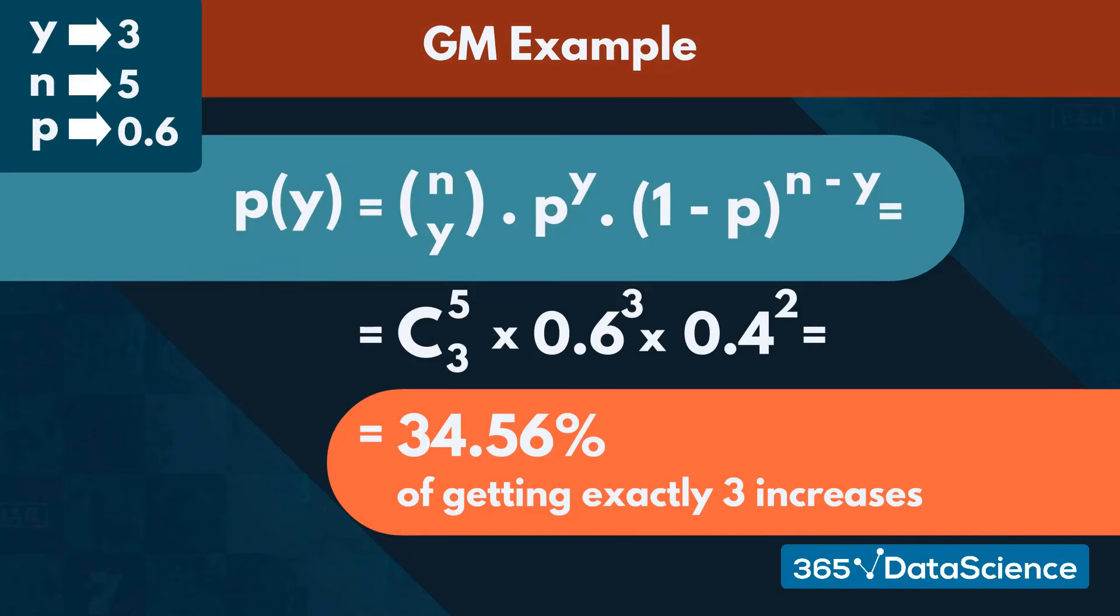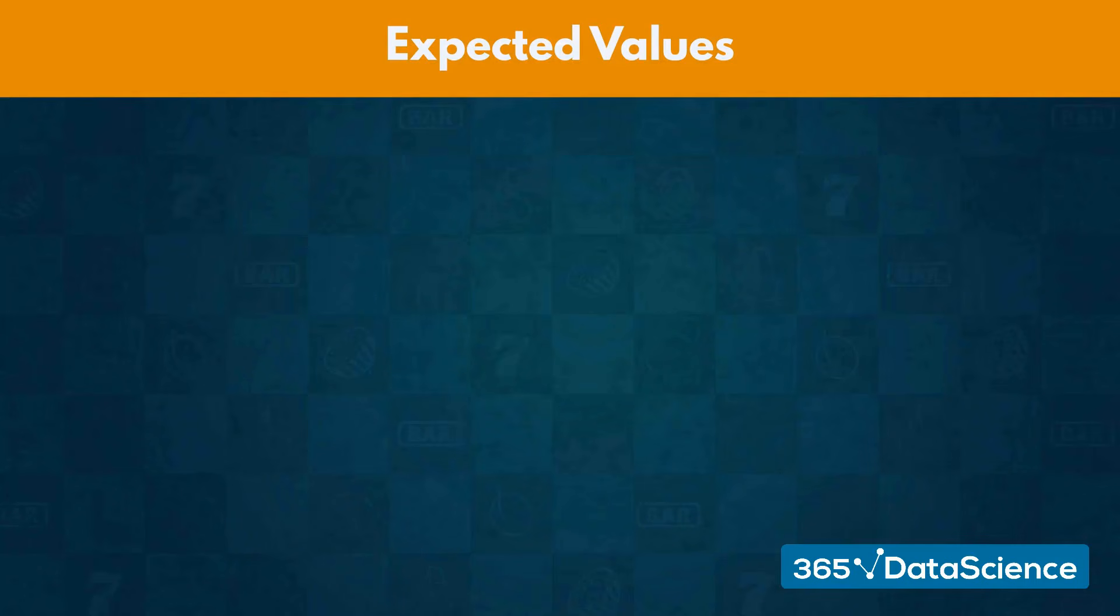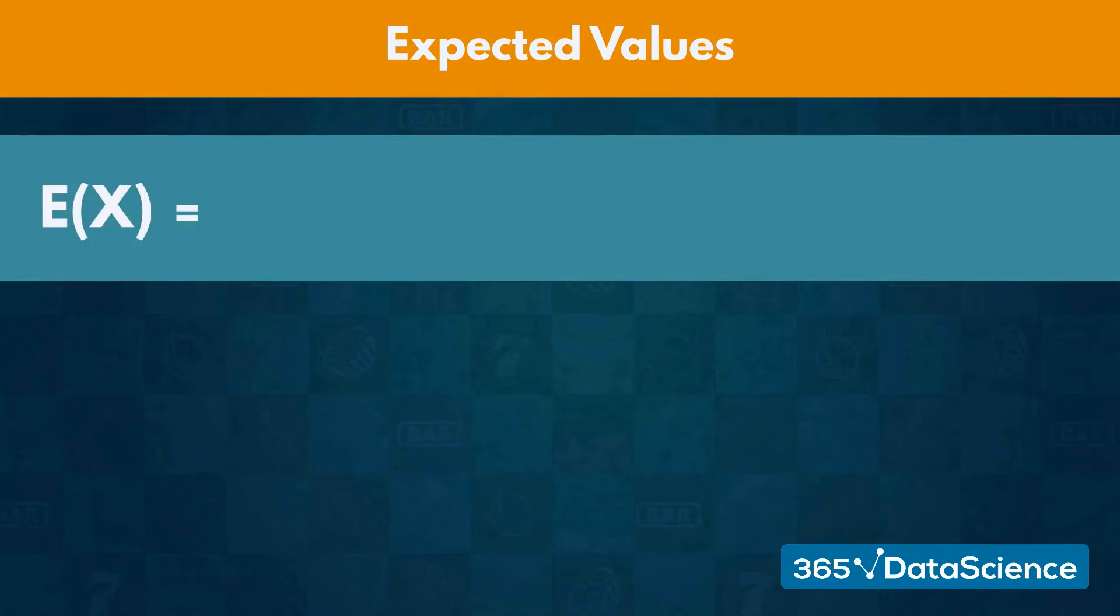Now that we know the probability function, we can move on to the expected value. By definition, the expected value equals the sum of all values in the sample space, multiplied by their respective probabilities.